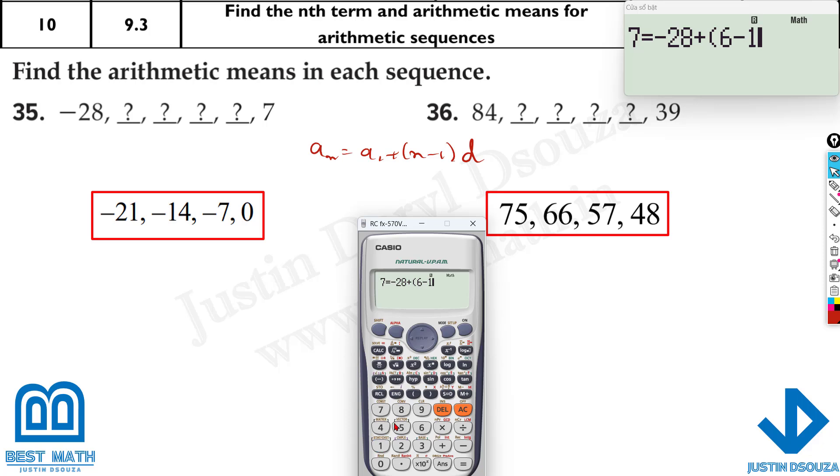So it's 6 minus 1. Close the bracket. Multiply it with alpha x, shift and solve. That is equal to 7. So 7 is the d value. That's been added up. So minus 28 and minus 28 plus 7. Now here we got negative 21. And now change this to answer and keep on pressing equal to. You'll get the next term and the next term and the next term and so on.